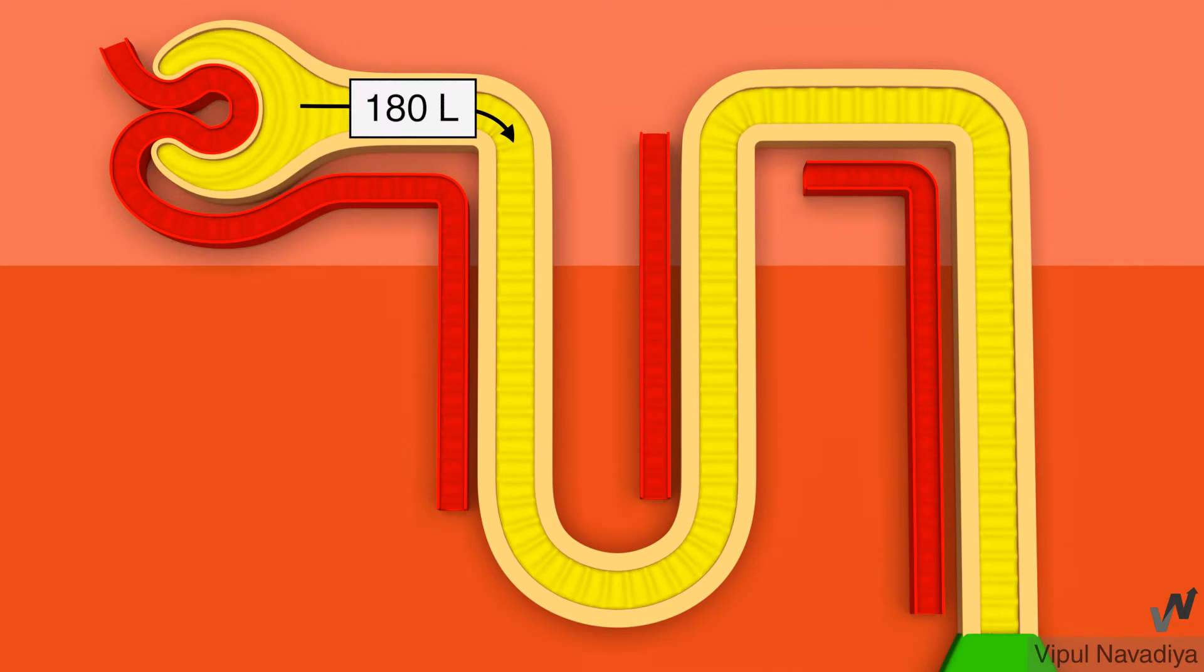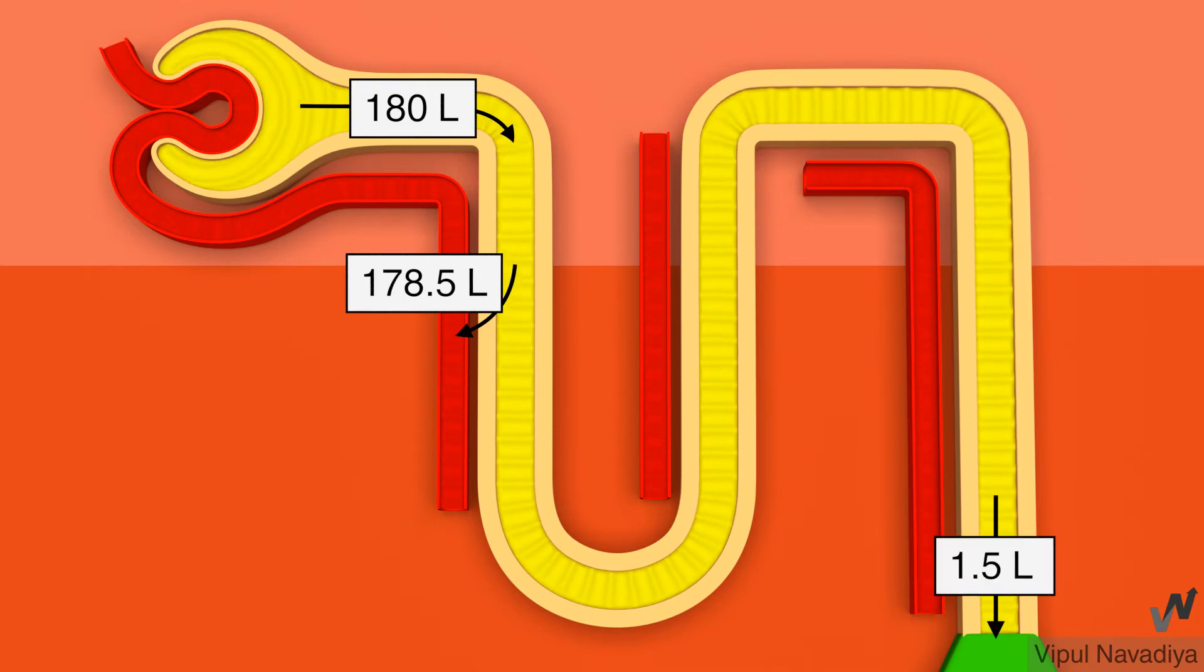Normally 180 liters of filtrate is produced every day, out of which approximately 178.5 liters is reabsorbed and about 1.5 liters is excreted as urine.